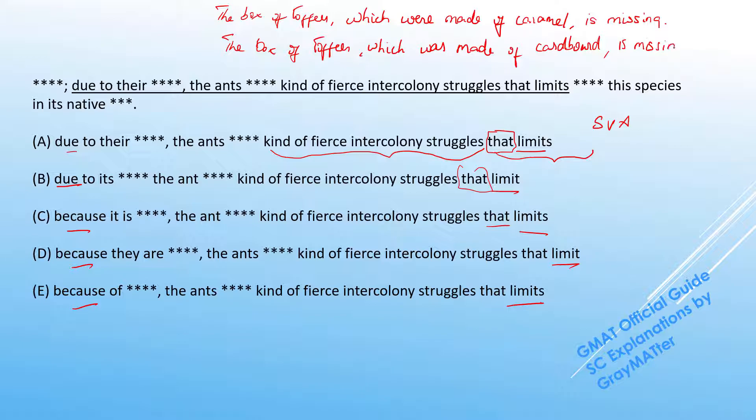So notice how the main verb in both these sentences is 'is' because the subject here is the box. But in the relative clause, we have 'were,' a plural verb, and 'was,' a singular verb.